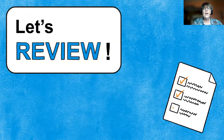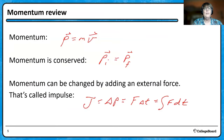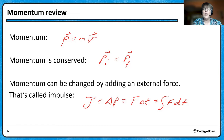Let's review momentum. I've got arrows over the P and the V because they are vectors. Momentum is conserved — very powerful. But you can change momentum if you add an external force, and we call that an impulse. The symbol for impulse is J, or you can use delta P. If you look at your equation sheet, there will be a J there.